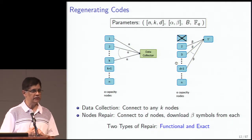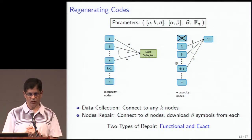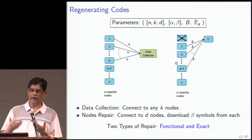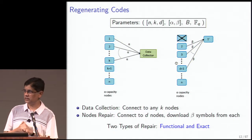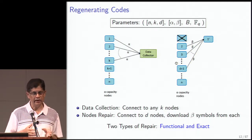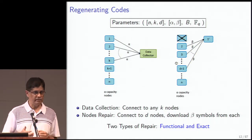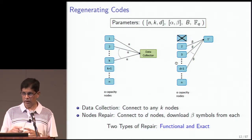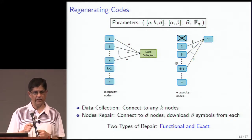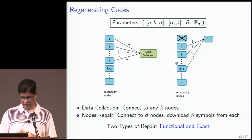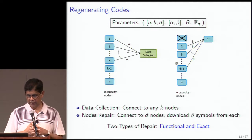Alex Dimakis and Kannan — I understand this came out of a class project at Berkeley started by Kannan — asked: can you design codes where repair is easy? The structure they imposed is that you should be able to repair a failed node by connecting to any d nodes and downloading β symbols from each. This d has to be ≥ k, but the key point is that β is much much smaller than α. So d·β, the total download, is much smaller than the file size — that's the main point of a regenerating code.